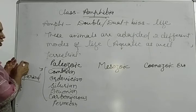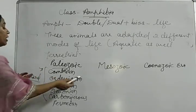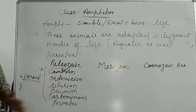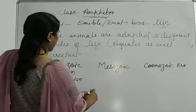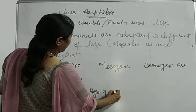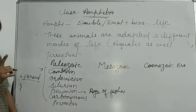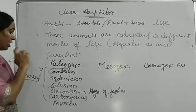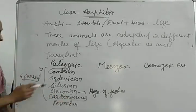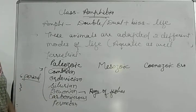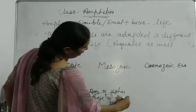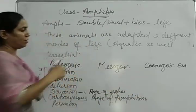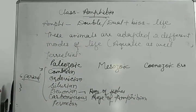In the Paleozoic Era, life did not originate until the Cambrian period, when life started to evolve. The Devonian period is known as the Age of Fishes, and the Carboniferous period is known as the Age of Amphibians.